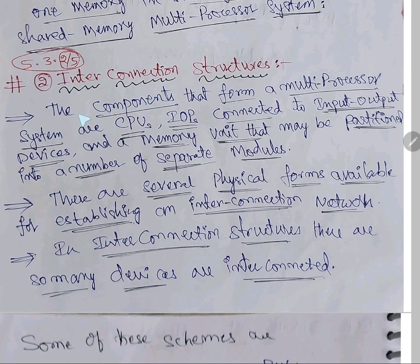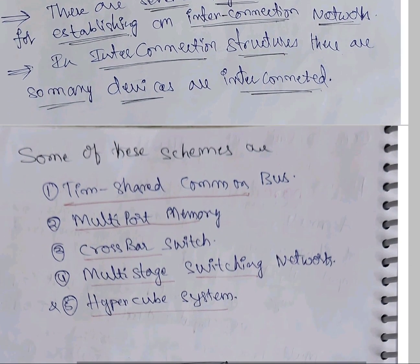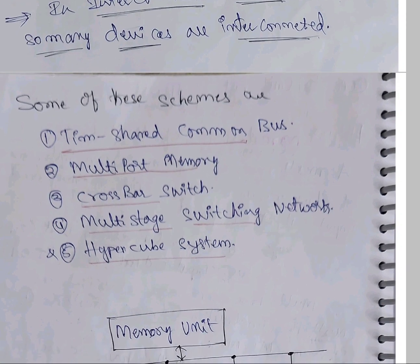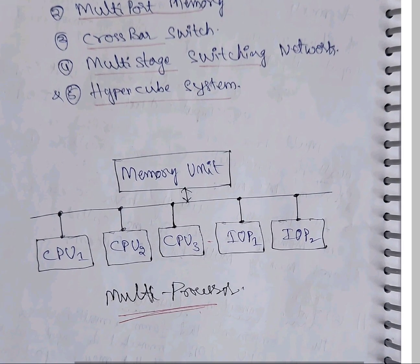The components that perform in a multiprocessor system are: CPUs, IOPs (input-output processors), peripheral devices connected to the input-output devices, and a memory unit that may be partitioned into a number of separate modules. There are several physical forms available for establishing an interconnection network in interconnection structures. So many devices are interconnected, and these are the functionalities performed. If you see the diagram you can understand it clearly.